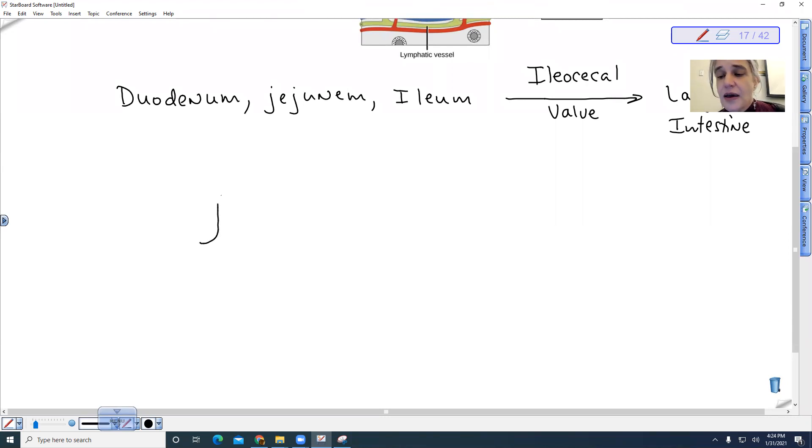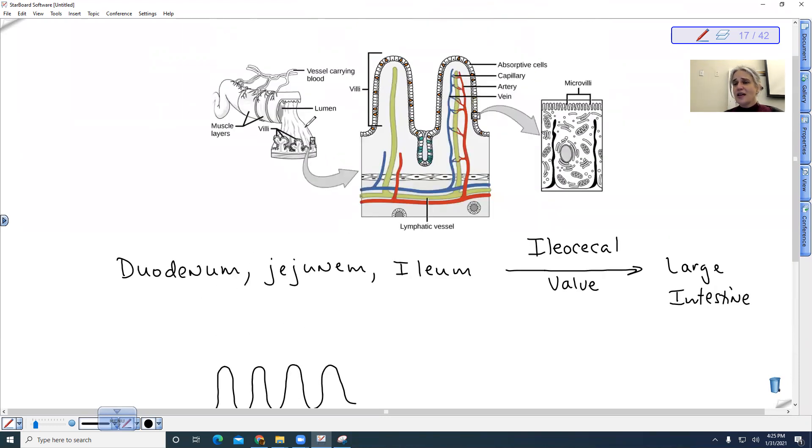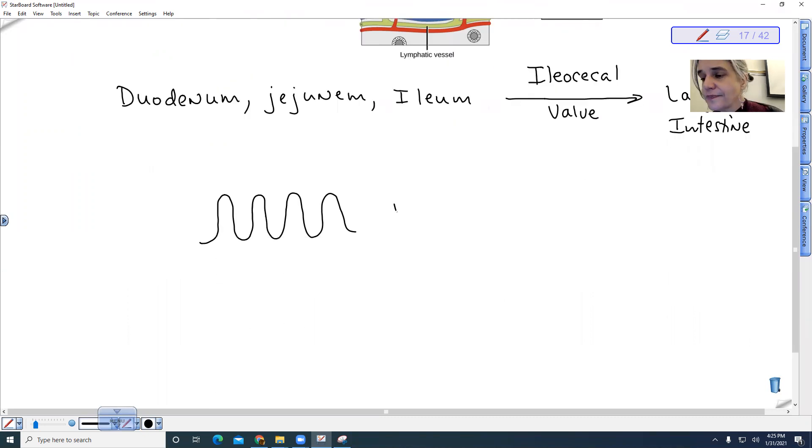So we have in our small intestine, we have these little structures, which are shown right here, these are just folds. If I were to look at a little piece of this fold, what I would see is that I would have folding upon folding.